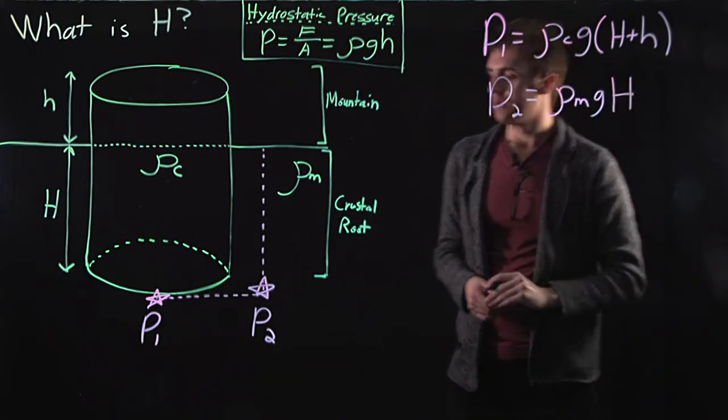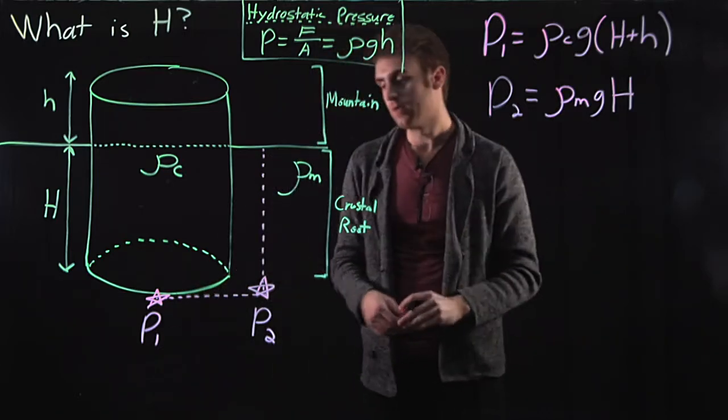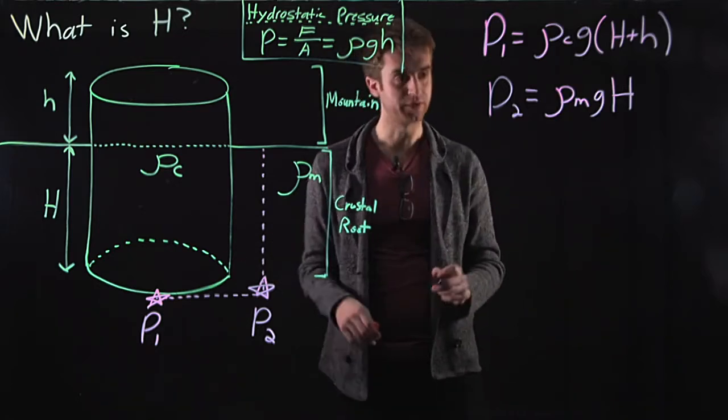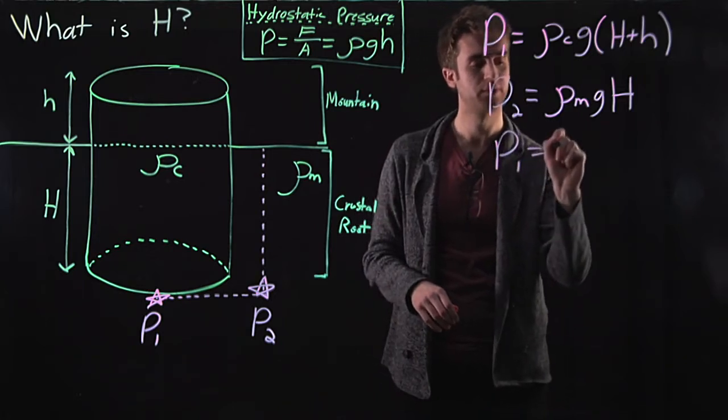All right. Now, p1 and p2 have to be equal in isostatic equilibrium. Otherwise, we would induce flow. And we're in isostatic equilibrium, so things are not flowing. So generally, p1 equals p2.